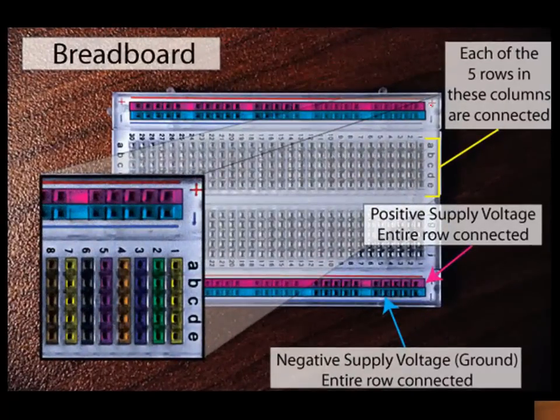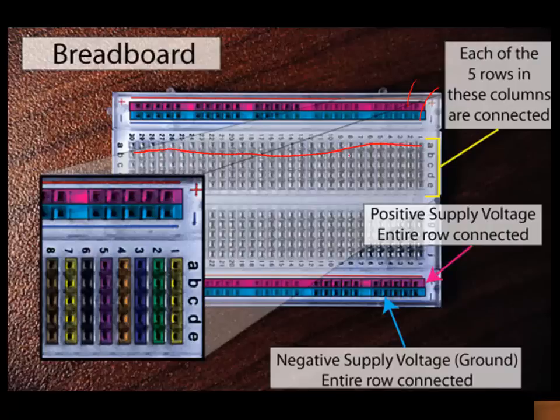So you've got these rows on the top that are labeled as plus and minus. Typically, you put your positive voltage in the plus, your negative voltage in the minus, and then you have these 30 columns that go all across, and each of those rows are connected in the columns. So all these are connected.